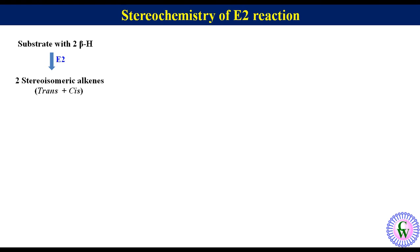This is because such substrates have two conformations with H and X anti-periplanar, but one conformation is more stable than other. More stable conformation leads to the major product while less stable conformation leads to minor. In such cases, trans alkene is formed as major while cis as minor.